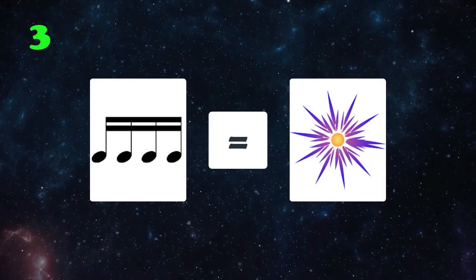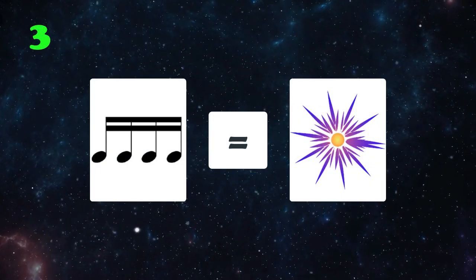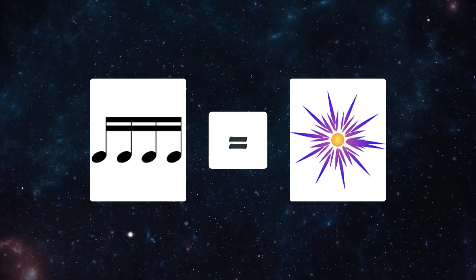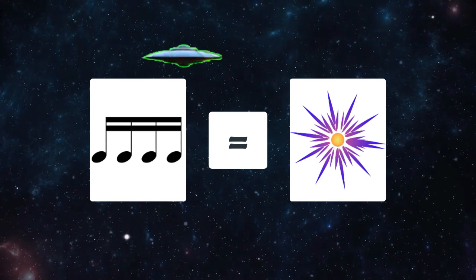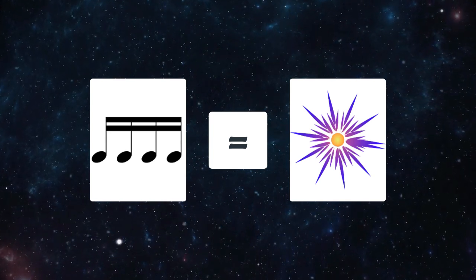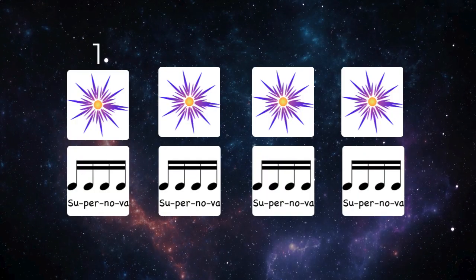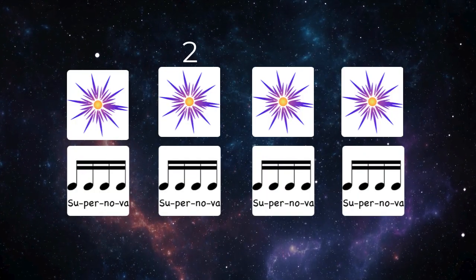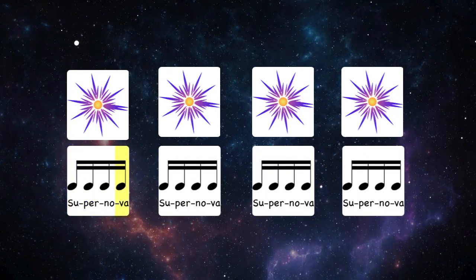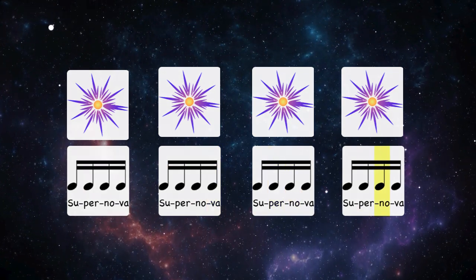When you see a group of four sixteenth notes, you'll say 'supernova.' Let's try four of those in a row. Remember, those happen quickly because you'll have to fit four syllables within one beat. One, two, ready, go. Supernova, supernova, supernova, supernova.